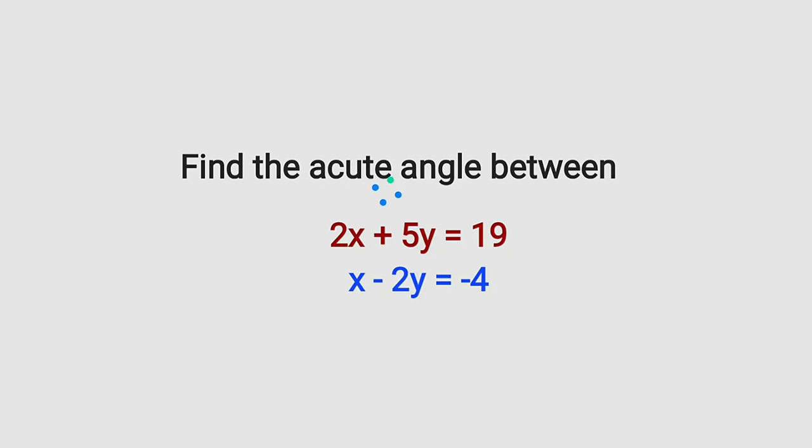we are going to learn how to find the acute angle between two intersecting lines. We are given that 2x plus 5y is equal to 19 and x minus 2y is equal to negative 4. We want to find that acute angle in between these two lines.